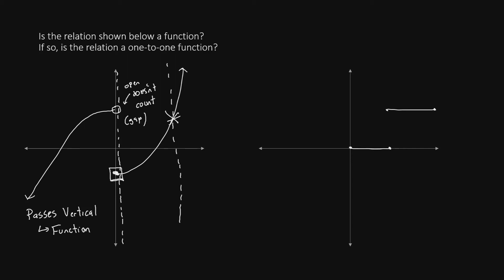However, there are a number of places where we could draw a horizontal line that would cross through twice. If we drew one through the middle, we can see there are two places where that horizontal line would cross through the graph. Therefore, this function fails the horizontal line test and is not one-to-one. Note that although it is possible to draw a horizontal line far above that crosses through only once, as long as it is possible for it to cross twice, you have failed the test and the function is not one-to-one.